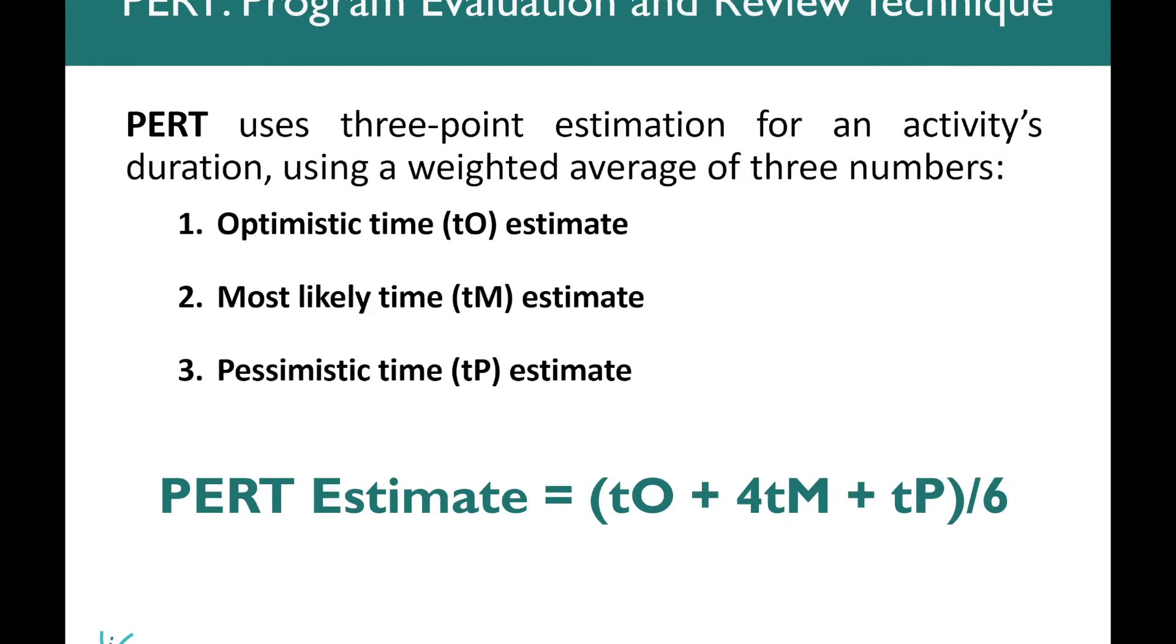Here's the PERT formula. The way that it works, you take the most optimistic time, you add it to the most likely time, which is weighted by four, and you add that to the most pessimistic time. And then you calculate that number and divide it by six. This equals your PERT estimate.